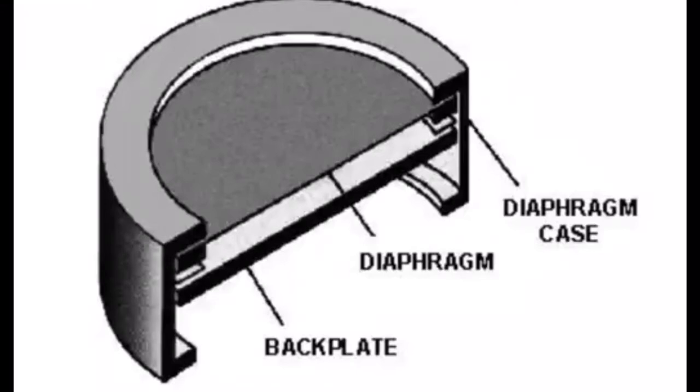So you have the diaphragm case, which holds everything together. Then you have a diaphragm, which is a piece of film, which typically is coated in gold due to its efficiency at conducting electricity. And finally, we have the back plate, which is a piece of metal made up of brass. So those are the three main components that make up a condenser microphone.